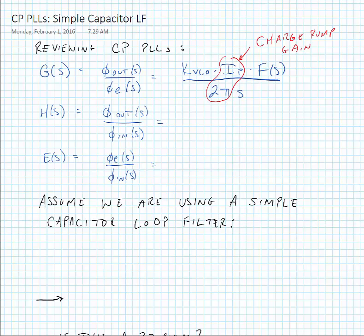We can look at the closed loop transfer function, phi out over phi in, and we can look at the error transfer function, phi error divided by phi in.